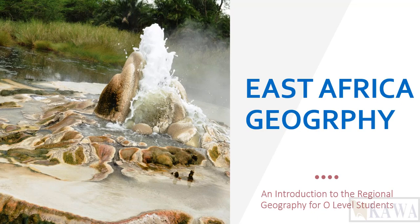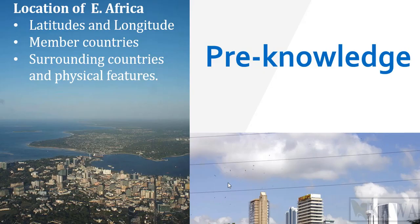In this lesson, we are focusing on the geography of East Africa. This is just an introduction to the regional geography of East Africa. We are going to go through a number of topics, and we expect that every student knows something about the location of East Africa, about latitudes and longitudes, the member countries which form East Africa, the surrounding countries, and some of the physical features of East Africa. We are building on what was covered before reaching secondary school.